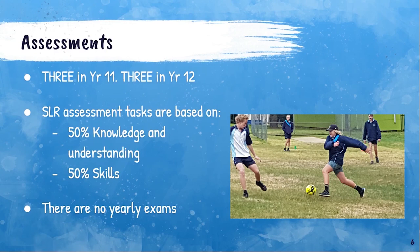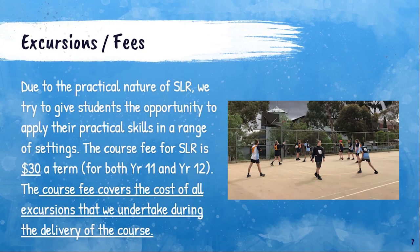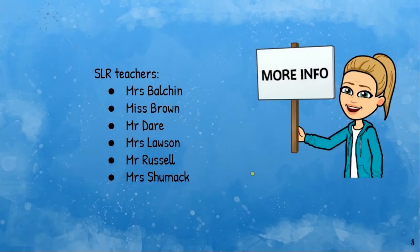Assessment tasks in SLR: you'll complete three in Year 11 and three in Year 12. They predominantly have a practical and theoretical component — some tasks might be a bit of both, others might be all practical or all theory. In SLR we do not do any yearly exams. Each year there is a fee for SLR which covers all excursions offered throughout the year to help implement the course. The fee is $30 a term, payable each term or as a yearly fee. If you're interested in doing SLR in Year 11, come up to the gym and have a chat to any of the PE teachers for more information.